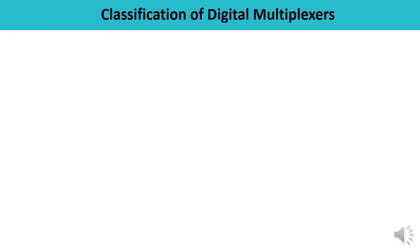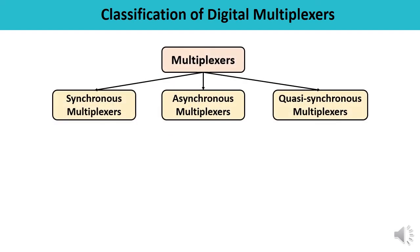Now let us talk about the classification of digital multiplexers. The various digital sources to be multiplexed will have different bit rates, and practically bit rate variation is the most serious design problem. Considering all these factors, digital multiplexers have been categorized into three categories: synchronous multiplexers, asynchronous multiplexers, and quasi-synchronous multiplexers.